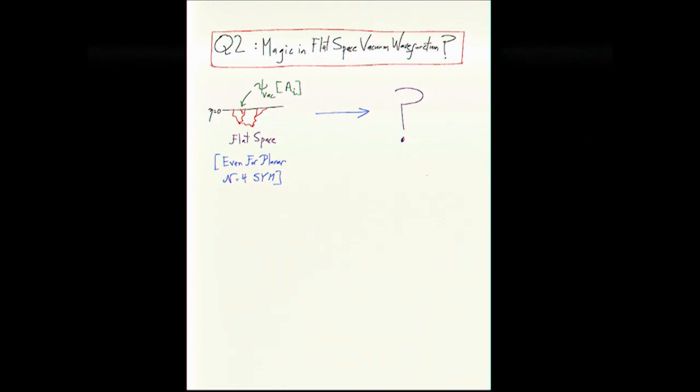So we can try to calculate the vacuum wave function in, for instance, N equals four, planar super Yang-Mills. That's one step towards cosmology. In fact, if it, as I said, if it was four-dimensional de Sitter space, this would be part of the four-dimensional cosmological correlators.